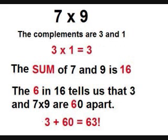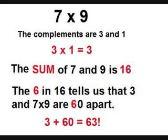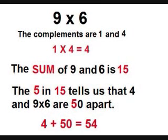Applying what we know to multiplying seven times nine: we first multiply their complements three and one, resulting in a product of three. Then we add seven and nine — the answer is sixteen — and six times ten is sixty, therefore the answer is three plus sixty, or sixty-three. Multiplying nine times six is easy. The complements are one and four, and the sum is fifteen. Therefore, the answer is four plus fifty, or fifty-four.